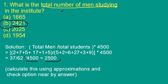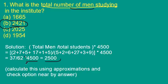The first question asks: what is the total number of men studying in the institute? The total number of students is 4500, and out of 4500 students we have to calculate the total number of men. Using one shortcut method with approximations, we can solve this question in a pretty easy way.